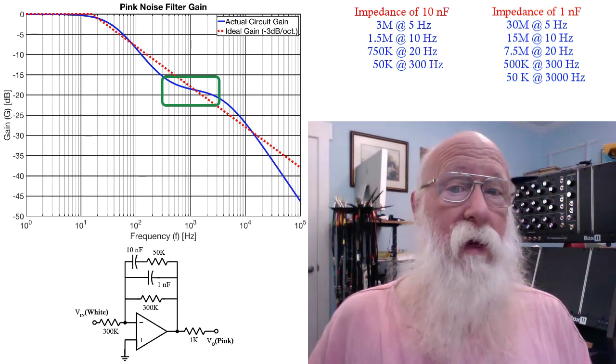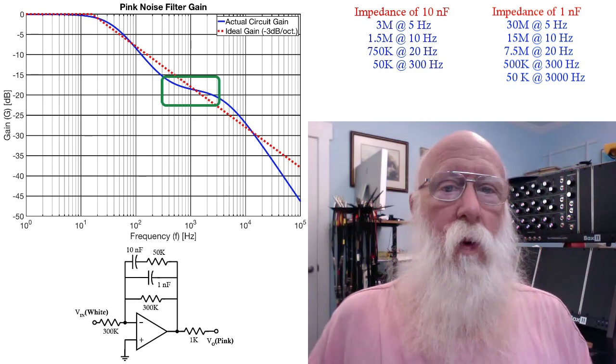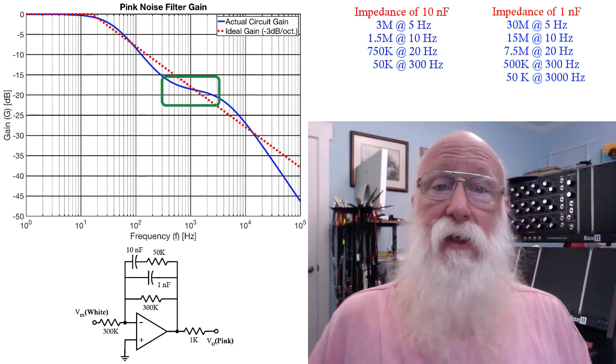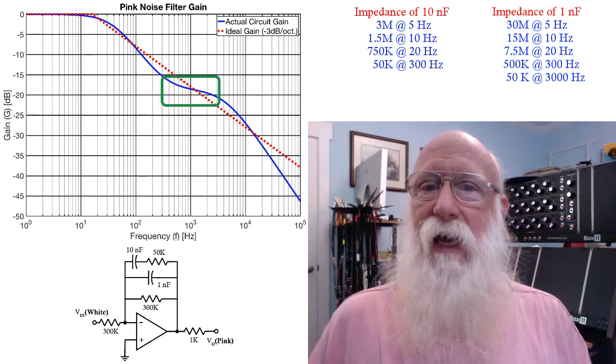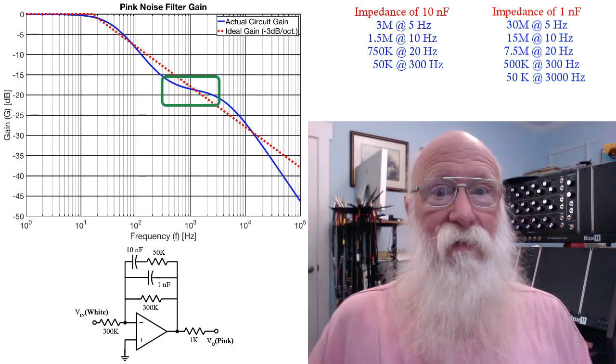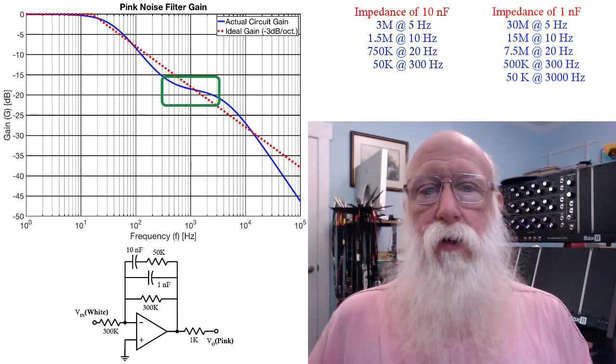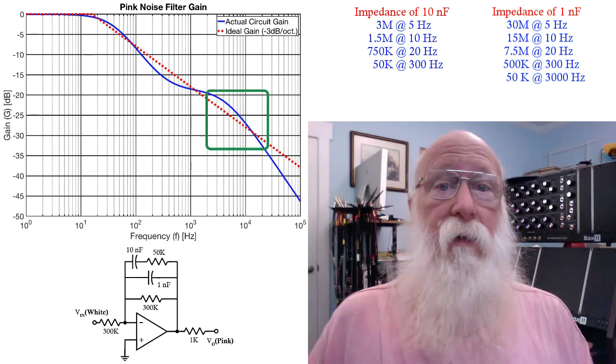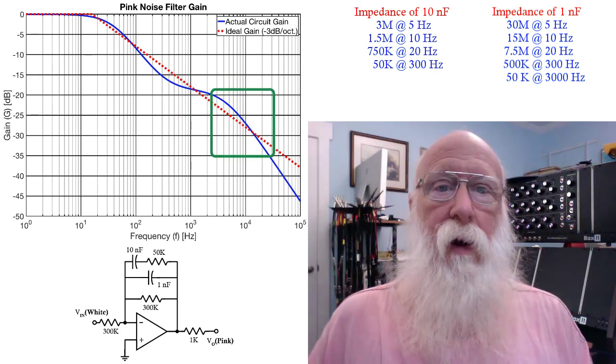But then in the low kHz range, the 1 nanofarad impedance starts getting close to 50K, and then gets smaller than 50K, and again you get a response of about minus 6 dB per octave.